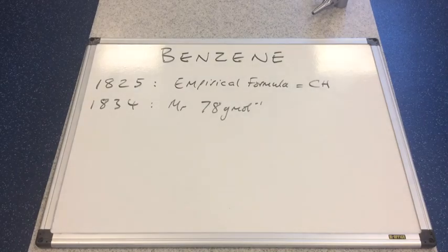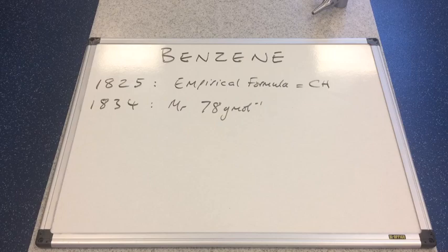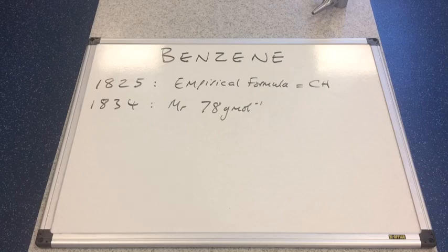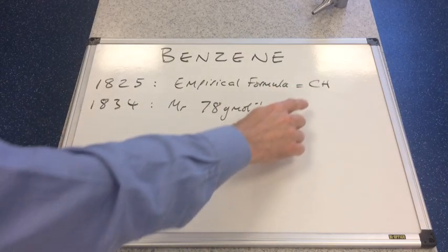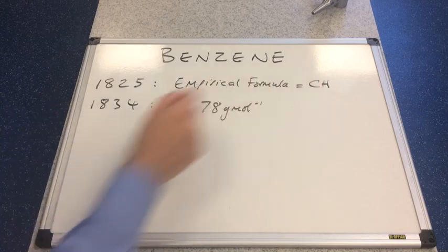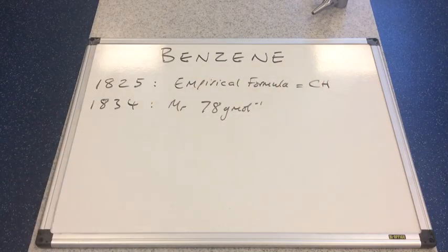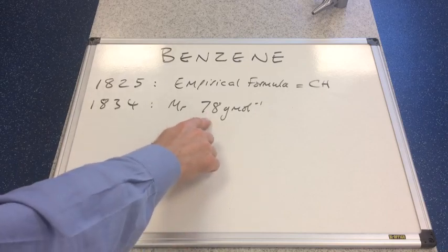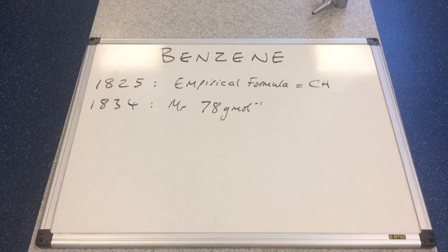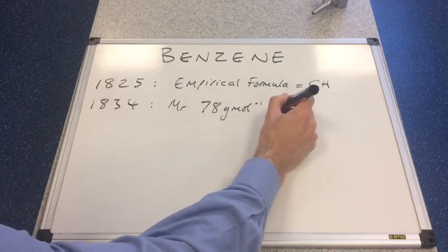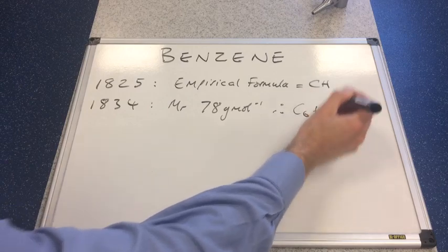Then in 1834, as technology advanced, they were able to determine the relative formula mass, the MR of benzene, and it came out at 78 grams per mole. So they were able to link these two pieces of information together. The mass of the carbon and hydrogen in the empirical formula is 13, and 13 goes into 78 six times. So the molecular formula must be C6H6.